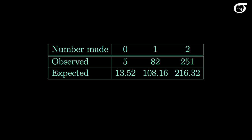Here's a comparison of the expected counts and what was actually observed. On 251 occasions Larry Bird actually made both free throws, but under the hypothesis of a binomial distribution with p=0.8 we would expect only 216.32. He missed both on only 5 occasions, but under the null hypothesis we would have expected 13.52. Those look like real differences, but are they big enough to be statistically significant?